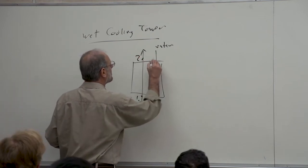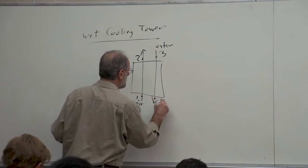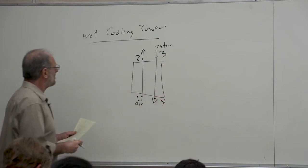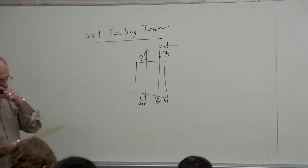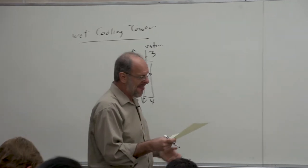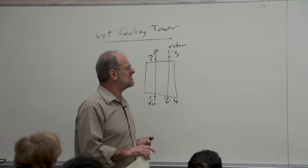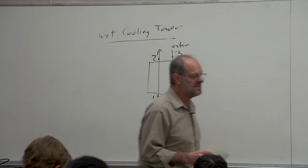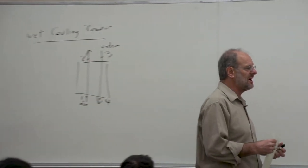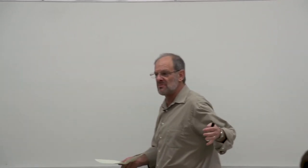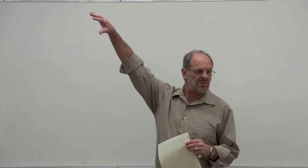Let's just put the same numbering scheme here on the board. One and two represents the air going in and out, and three and four represents the water. We understand that cooling towers are used in industry a lot — I mean, they're absolutely everywhere. I know I mentioned this last time; maybe some of you have started to look around and you begin to see them.